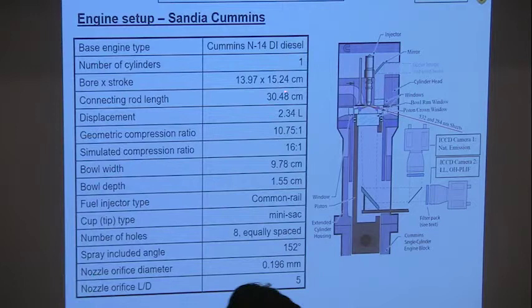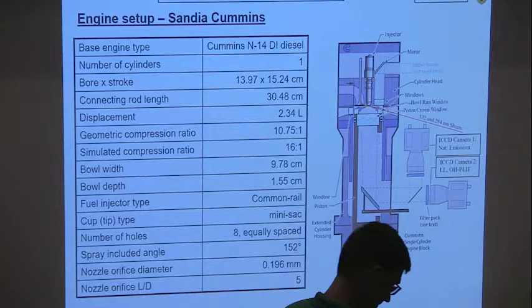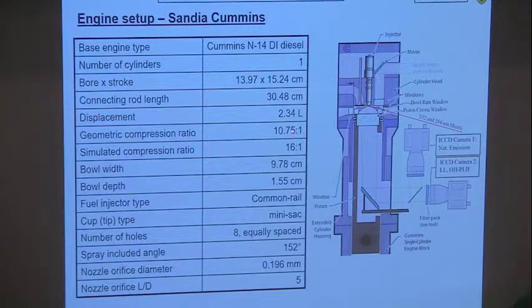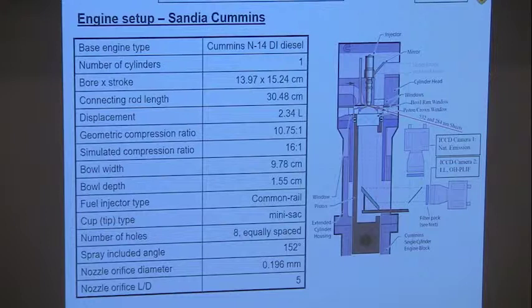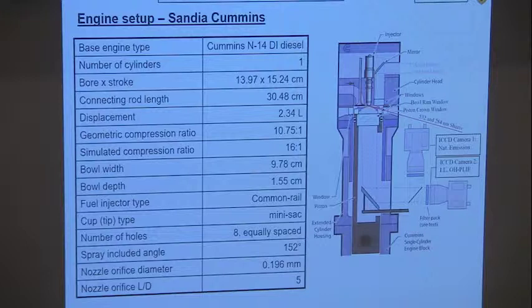The engine is almost 140 millimeter bore, 2.3 liters displacement, and a 10 to 10.7-to-1 compression ratio — that's to try to keep the glass piston intact. The conditions at intake valve closure were chosen such that results at top dead center look similar to those in a 16-to-1 compression ratio engine. The fuel injector is common rail with an eight-hole nozzle and almost 200 micron nozzle diameter.